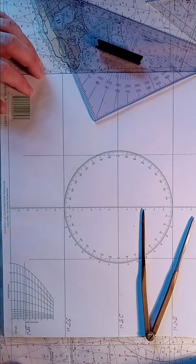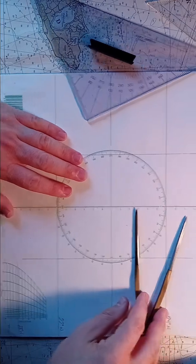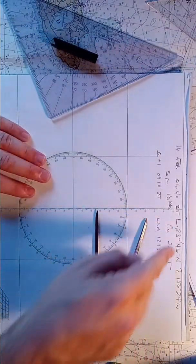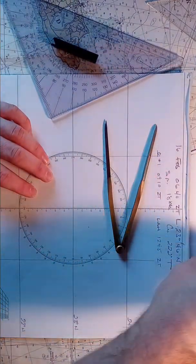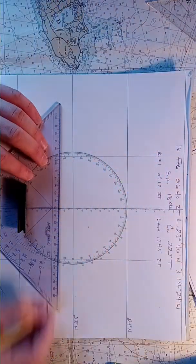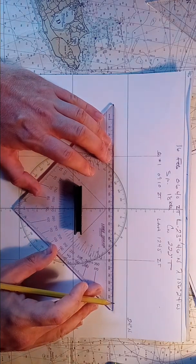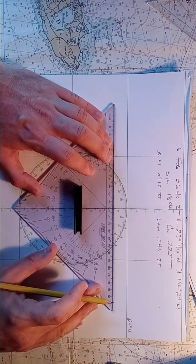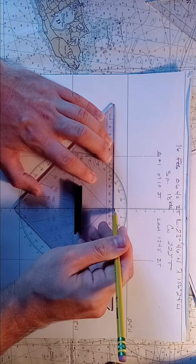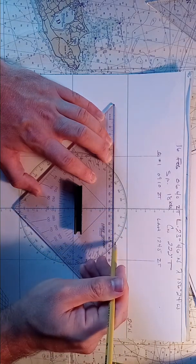That's the plotting sheet set up. Now we're going to lay down our initial position. 23, 46. 23 degrees north, 46 minutes. And we're going to go to 156, 24.